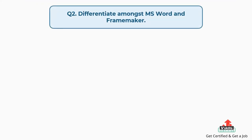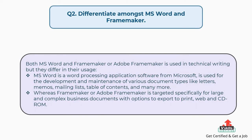Question number two: differentiate amongst MS Word and FrameMaker. Both MS Word and Adobe FrameMaker are used in technical writing but differ in their usage. MS Word is a word processing application from Microsoft used for development and maintenance of various document types like letters, memos, mailing lists, and table of contents. Whereas Adobe FrameMaker is targeted specifically for large and complex business documents with options to export to print, web, and CD-ROM.